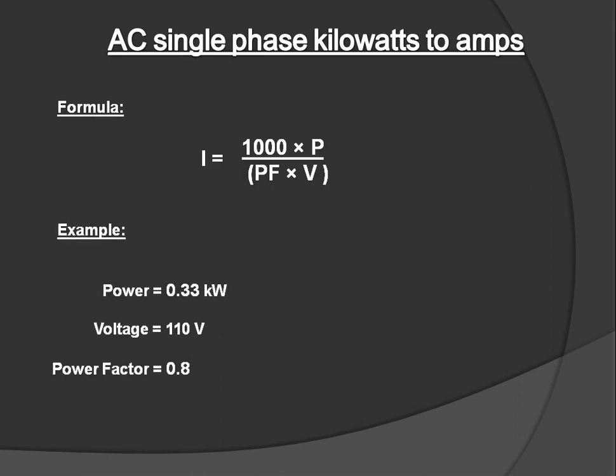We have some values. Power equals 0.33 kilowatts, voltage equals 110 volts, and power factor equals 0.8. Put the values in this formula. The answer is 3.75 amperes.